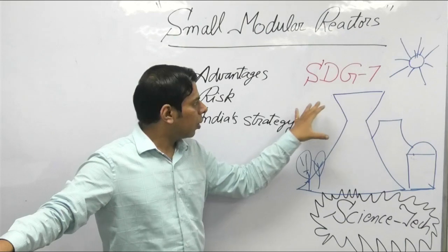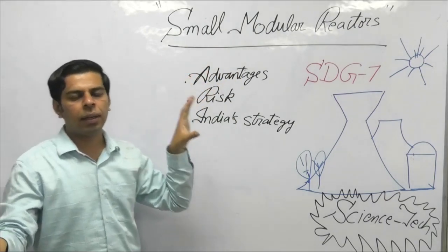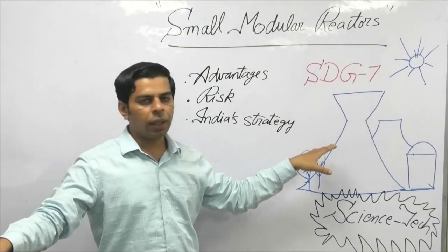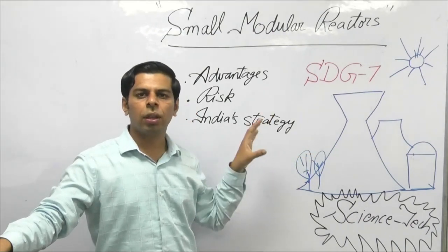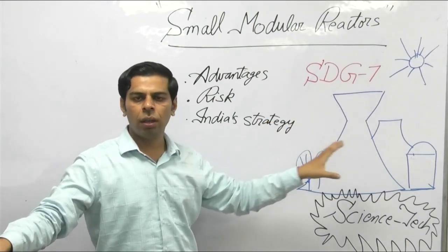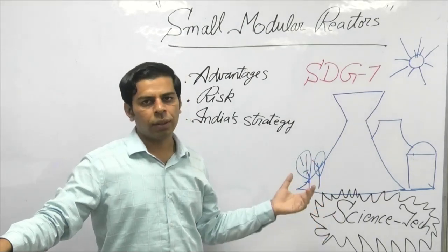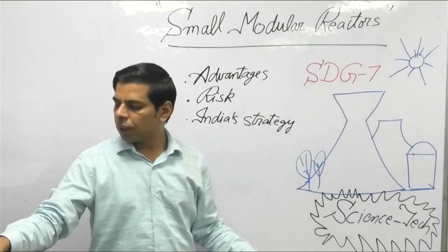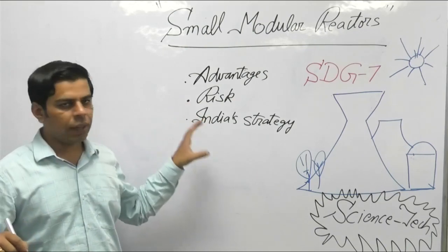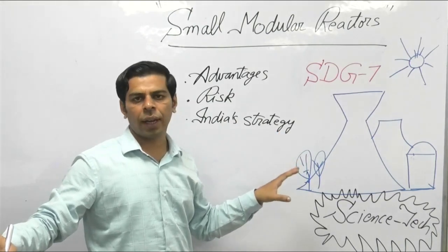Coming to small modular reactors - 'small' highlights that the size is about one-third of conventional reactors, similar to their energy generating capacity. The basic classification of nuclear reactors includes micronuclear reactors, small modular reactors, and conventional nuclear reactors. Micro reactors generate about 10 megawatts, while SMRs generate up to 700 megawatts. Conventional reactors generate 700 to 1000 megawatts.